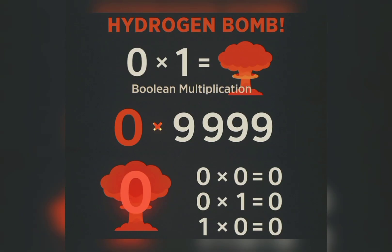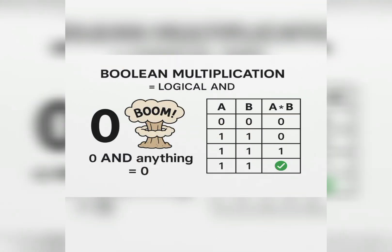Now consider multiplication of binary digits in Boolean algebra. Zero times anything equals zero — it eliminates everything. So zero times zero equals zero, zero times one equals zero, one times zero equals zero. But one times one equals one. Remember: in Boolean algebra, all mathematical operations are the same except one plus one equals one.